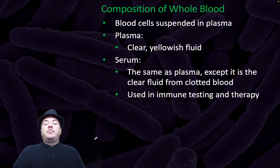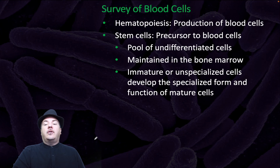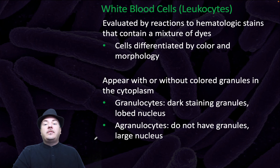The composition of whole blood includes blood cells suspended in plasma. Plasma is a clear yellowish fluid, whereas serum is the same as plasma except it is the clear fluid from clotted blood. Serum is used in immune testing and therapy. Hematopoiesis is the production of blood cells. Stem cells are the precursor to blood cells — a pool of undifferentiated cells maintained in the bone marrow. Immature or unspecialized cells develop the specialized form and function of mature cells. White blood cells, or leukocytes, are evaluated by reactions to hematologic stains that contain mixtures of dyes, so the cells can be differentiated by color and morphology, appearing with or without colored granules in the cytoplasm.